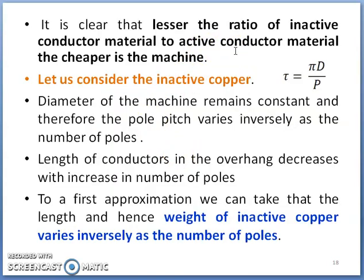The cost of the machine is less for the machine which has a lower ratio of inactive to active conductor material. So let us discuss the effect of inactive copper on weight of copper material required depending upon the number of poles.